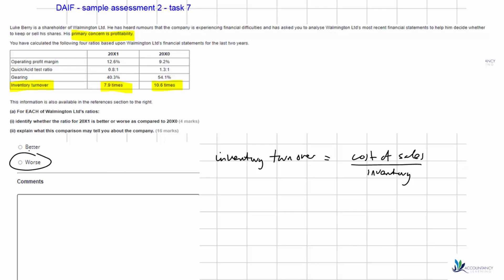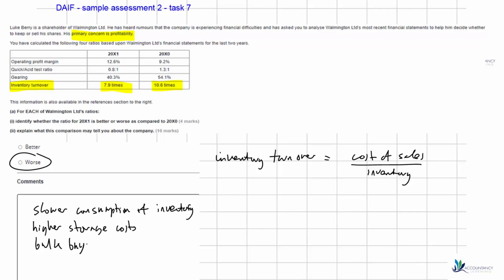We are holding on to our inventory for a longer period before consuming it, which may be causing higher storage costs. A possible cause links back to the operating profit margin discussion: if purchase prices have gone down, we may be bulk buying inventory to achieve a cheaper unit cost, but this means we have to hold on to it for longer to benefit from those bulk purchases.